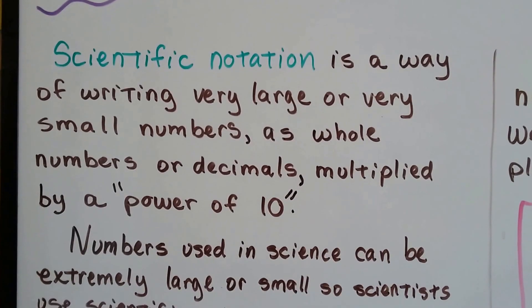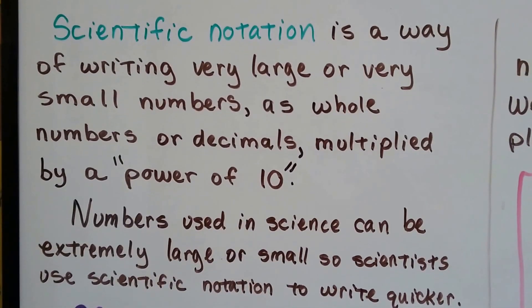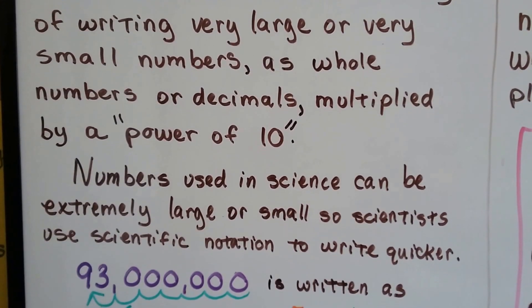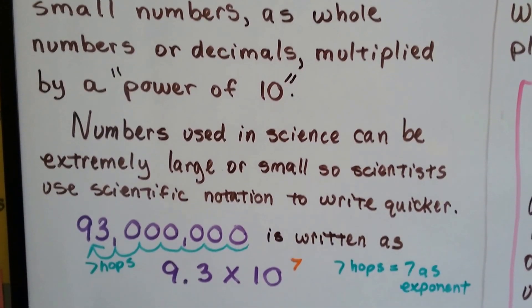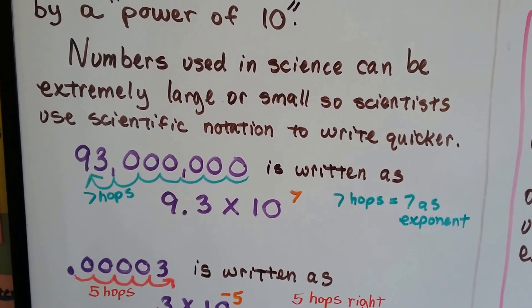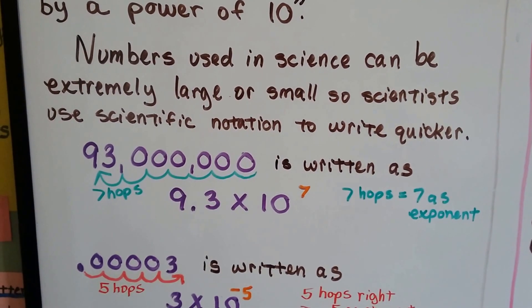As we said in the previous video, scientific notation is a way of writing very large or very small numbers as whole numbers or decimals multiplied by a power of 10. The numbers used in science can be extremely large or small, so scientists use scientific notation to write quicker.